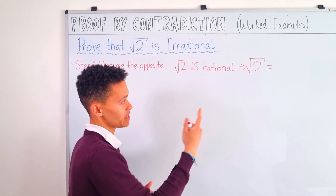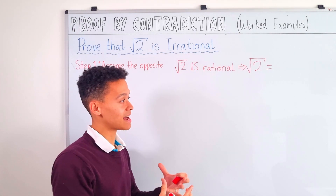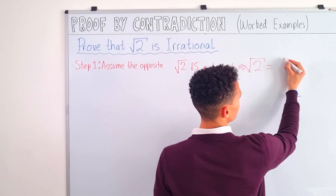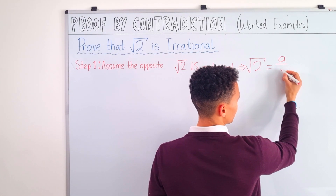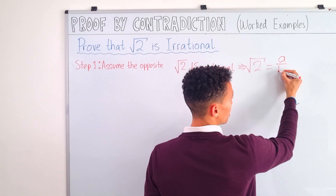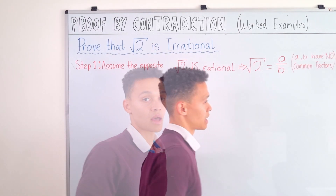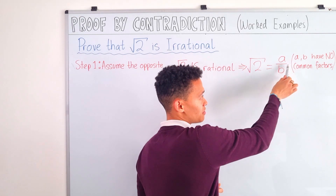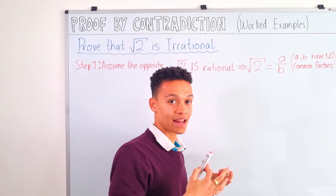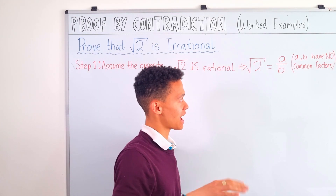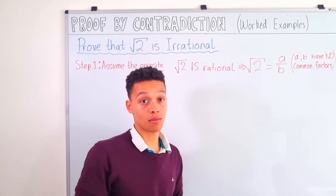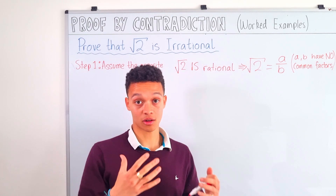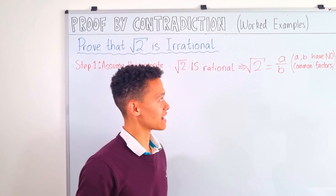If something is rational it can be expressed as an integer divided by another integer. So root 2 can be expressed as some integer a divided by b. However, there is one very important condition: a and b cannot have any common factors at all. For example, they both could not be even because they both have a factor of 2. That's going to be very important for the next step.